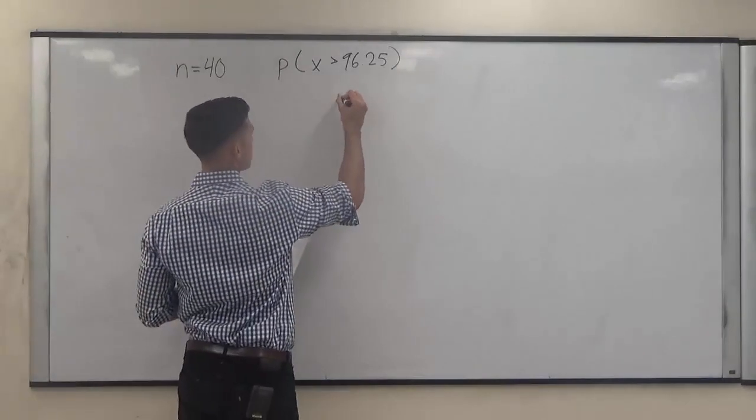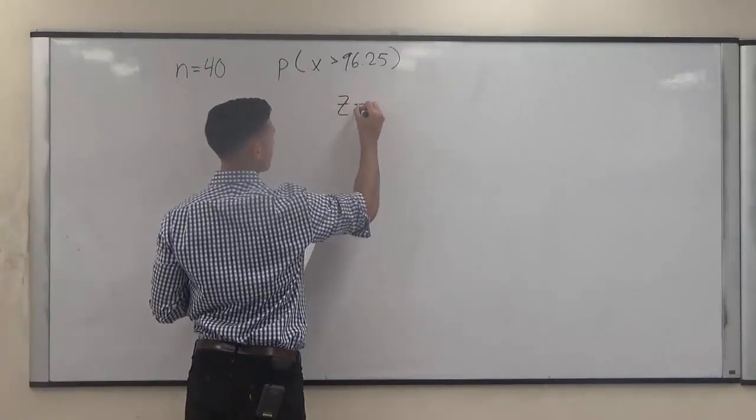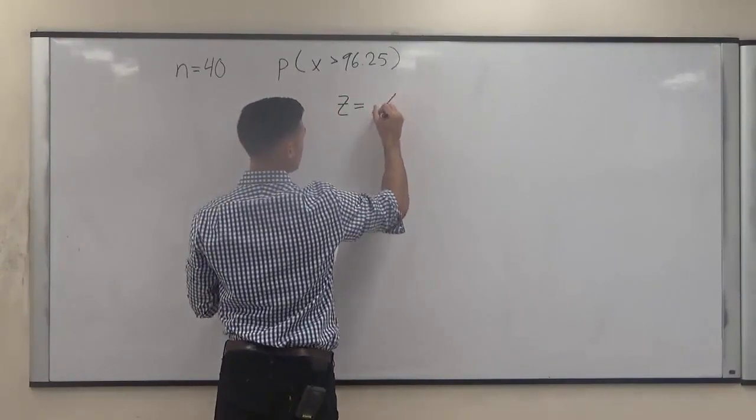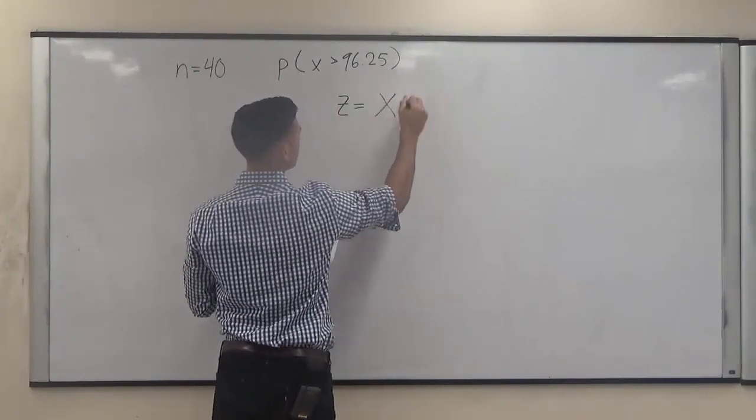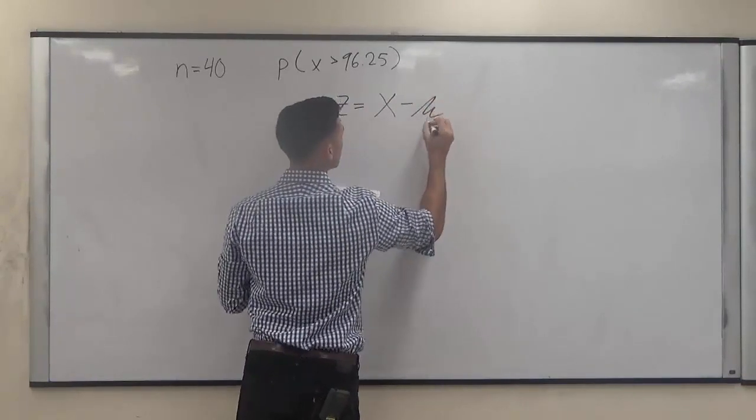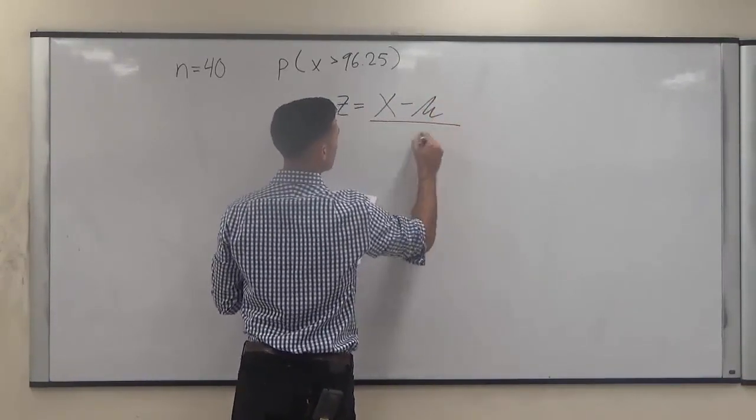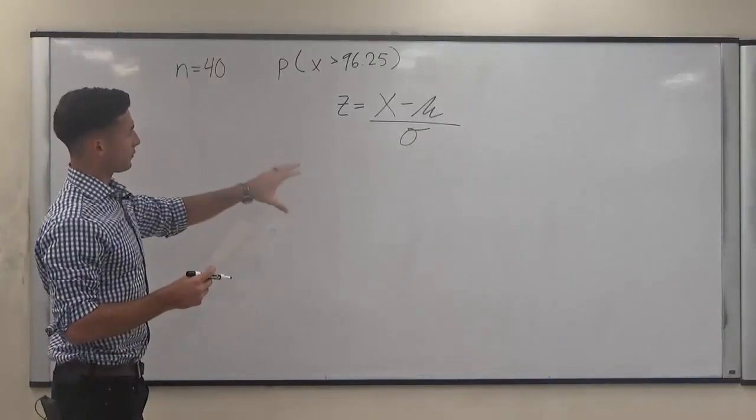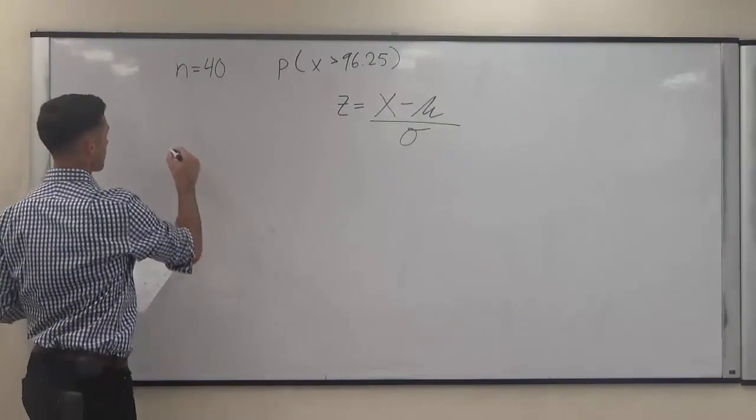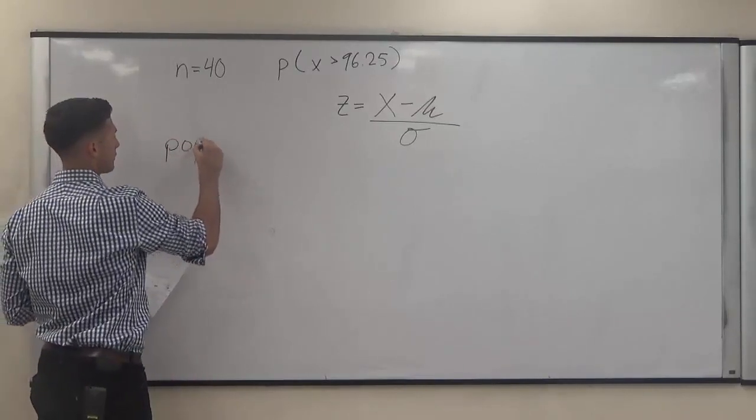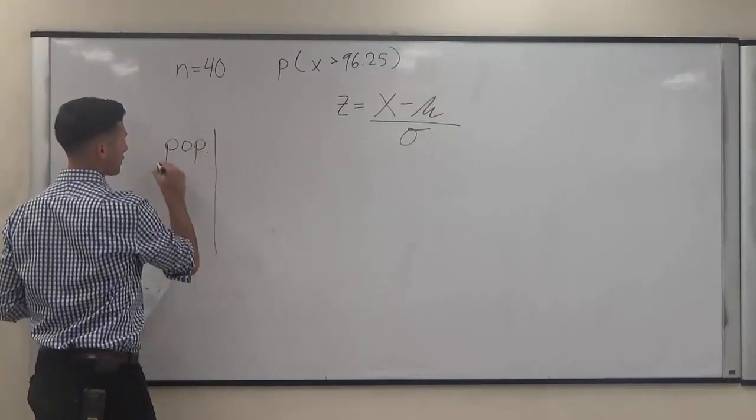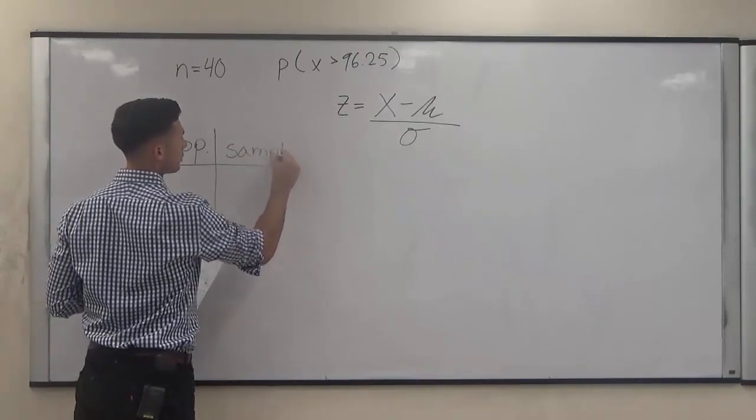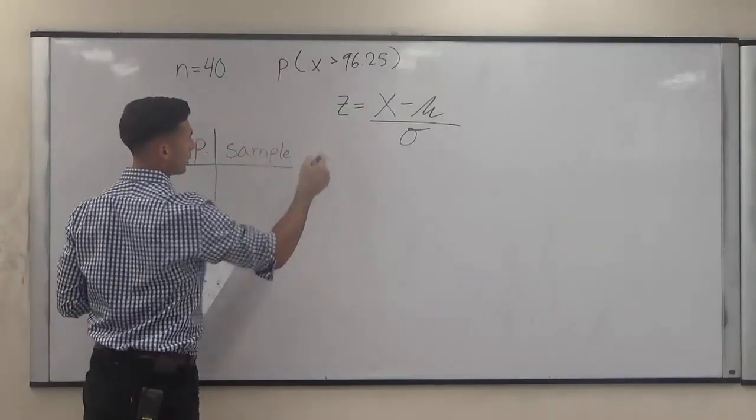So the formula we're going to use to solve this to get our z-score is going to be z equals x minus the sample mean divided by sample standard deviation. So we want to find what we're going to plug into that based off what the problem gives us. The problem gives us population info.